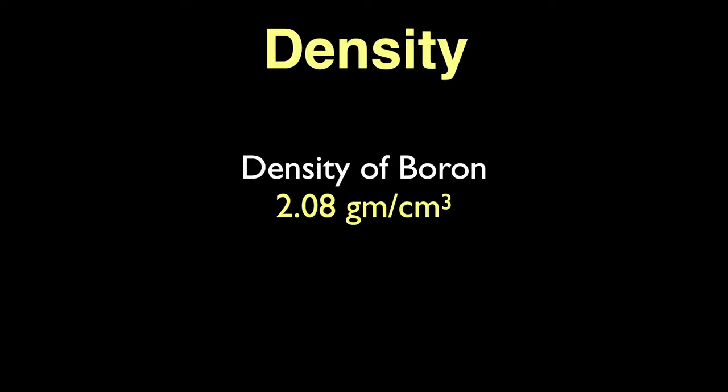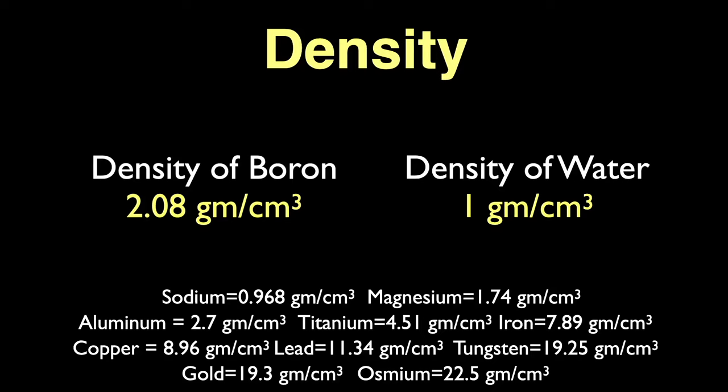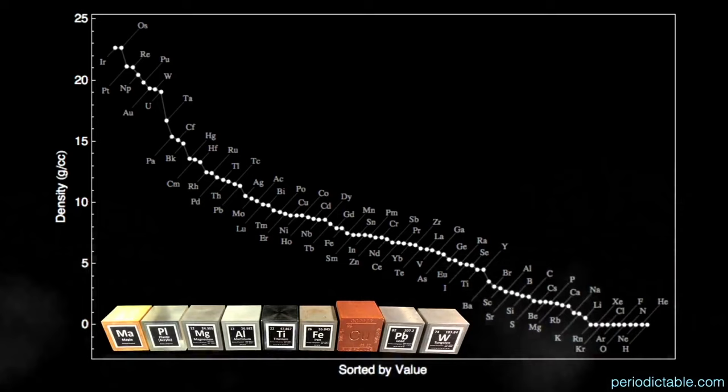Boron is very light. Its density is only 2.08 grams per cubic centimeter, about double that of water at one gram per cubic centimeter. I've put up a few more elemental densities so you can compare. Note that boron falls between the densities of magnesium and aluminum. Here's a graph of the elements from highest density to lowest density. When I do this talk with an actual audience, I have a set of blocks so you can feel density for yourself.